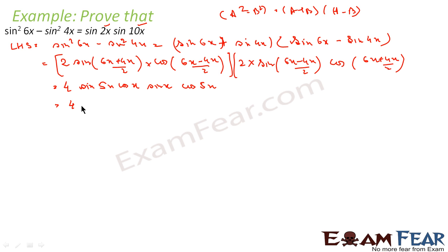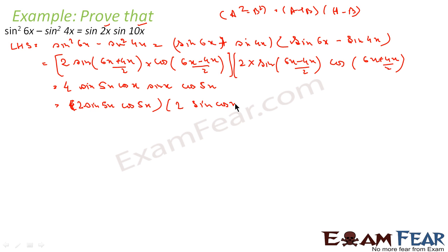So we put 5x together and x together. We get 4 into sin 5x cos 5x into sin x cos x. I take 2 here, so this becomes 2 sin 5x cos 5x multiplied by 2 sin x cos x, because I have to prove sin 2x into sin 10x.